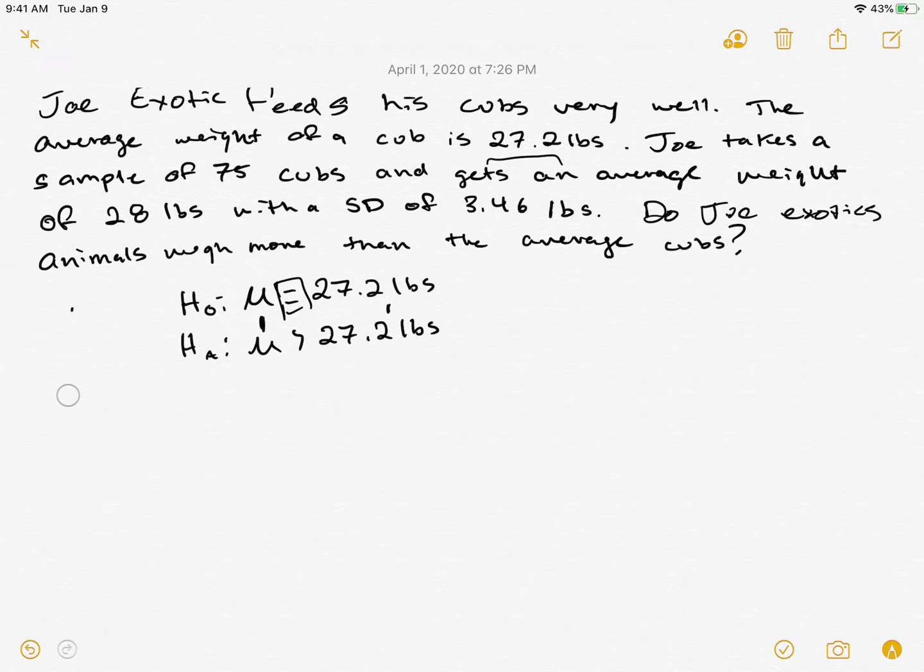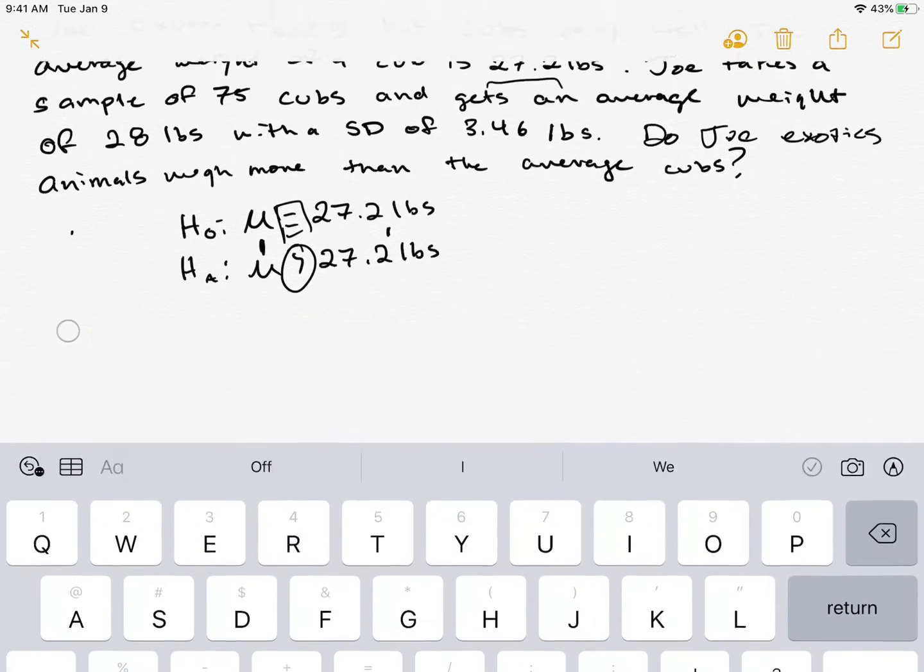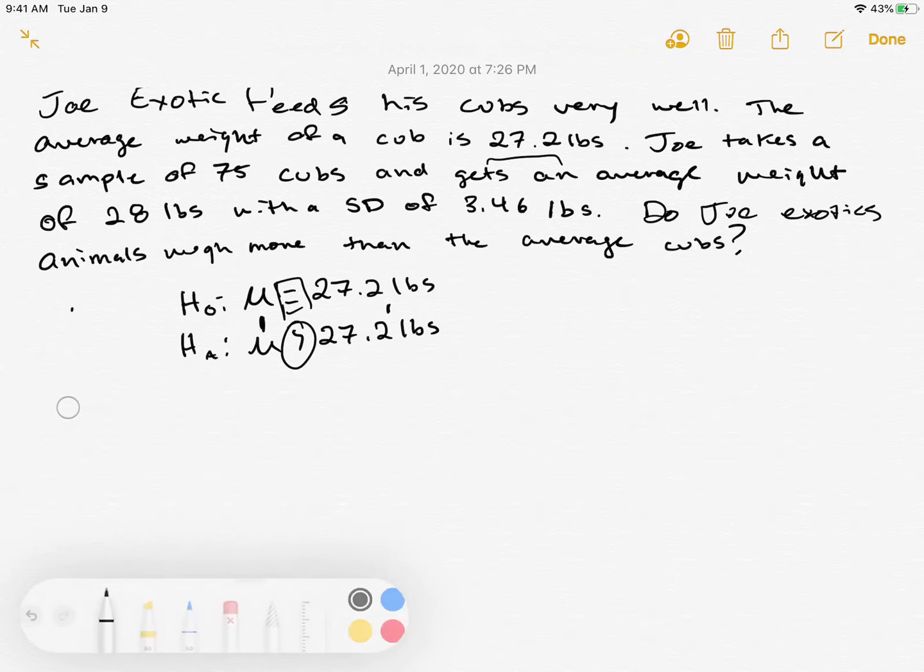When you're doing these hypothesis tests, your parameters stay the same. Your weights stay the same. Your null is always going to be that your population mean is equal to something, and then you just have to switch this depending on what tail that you're doing.